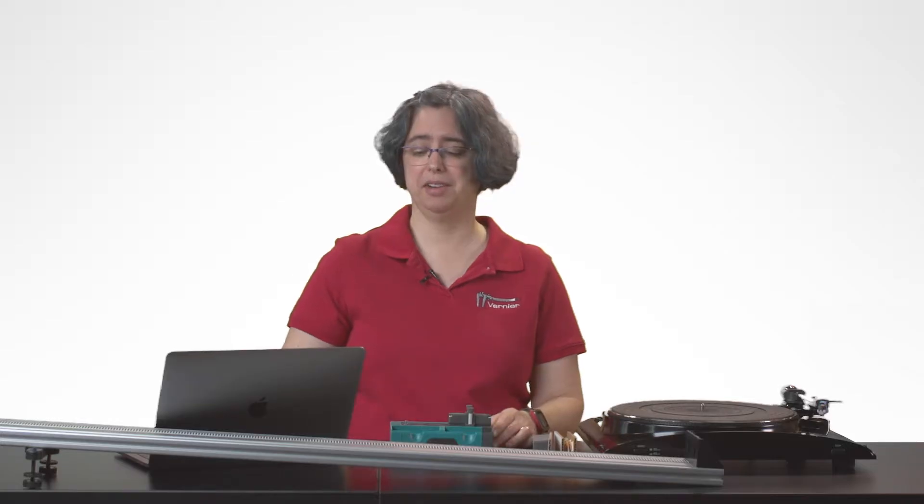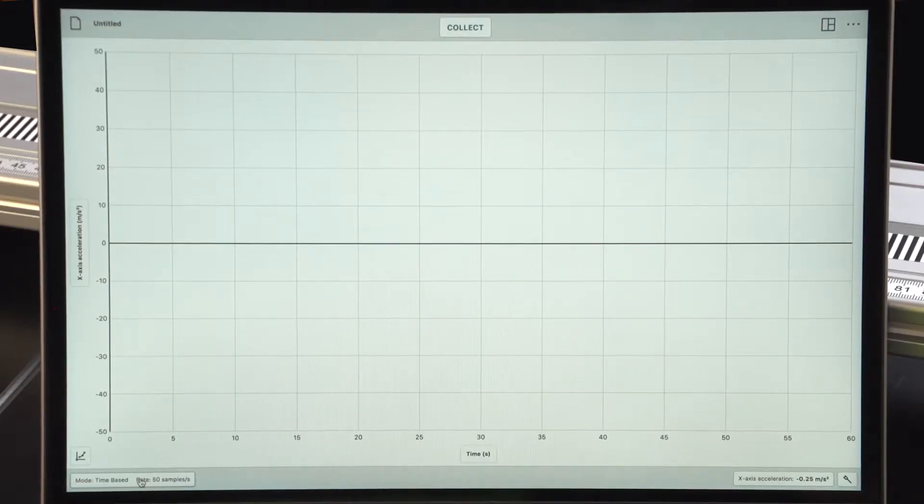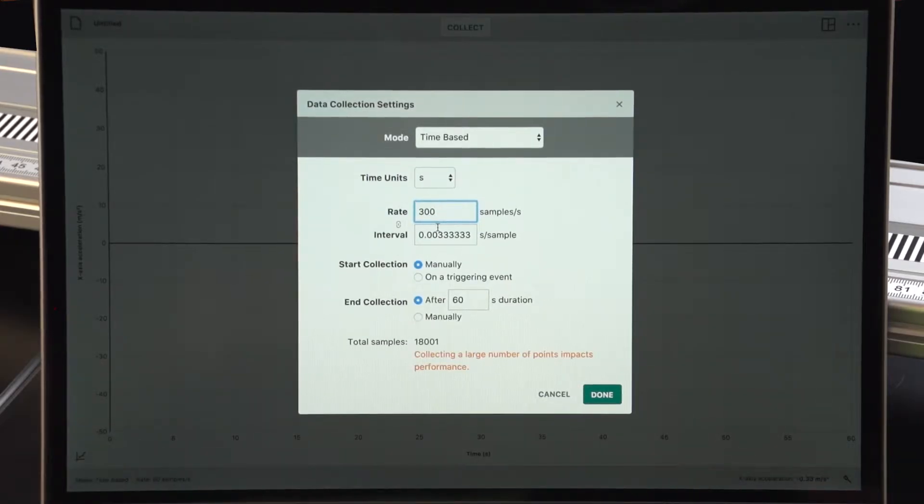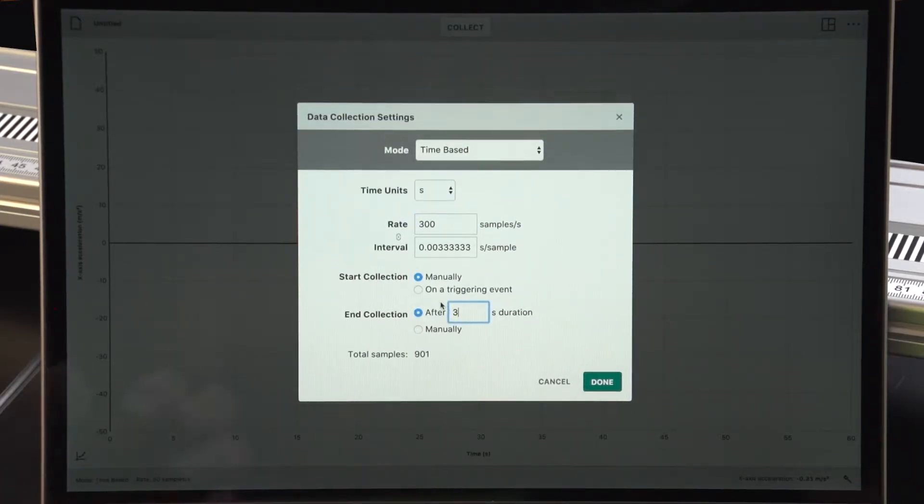I also need to adjust the software because collisions take place over a very short amount of time, so you need to increase the data collection rate. In this case, I'm going to change the data collection rate from 50 samples per second to 300 samples per second. I'm also going to decrease the time for data collection from one minute to three seconds. Collisions take very little time.